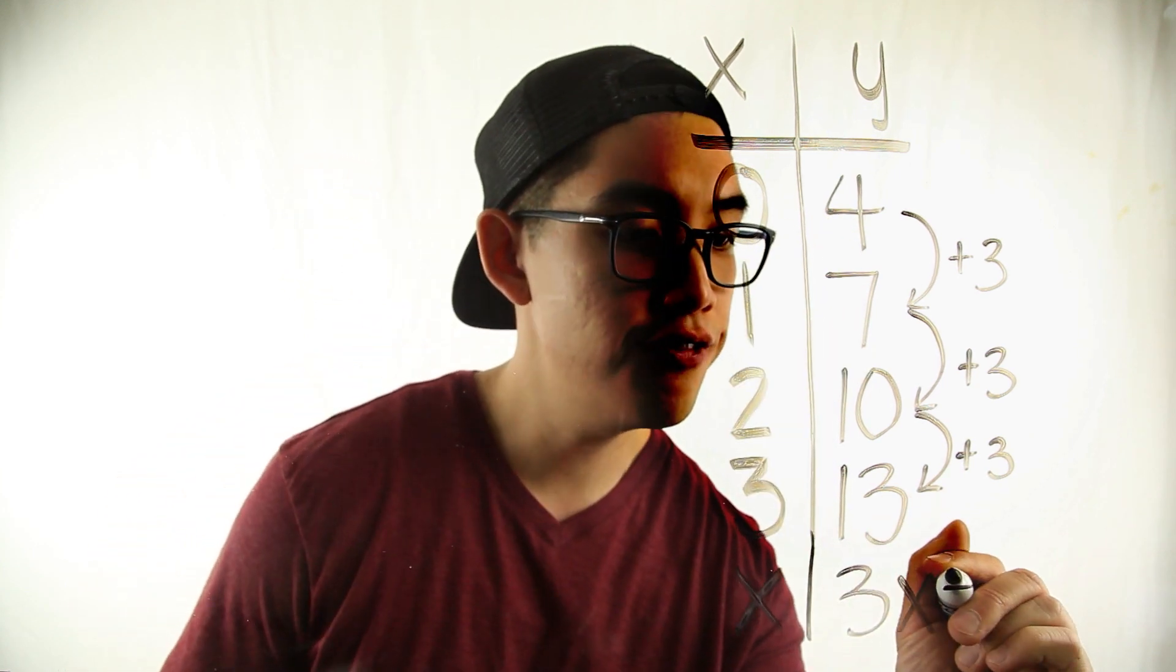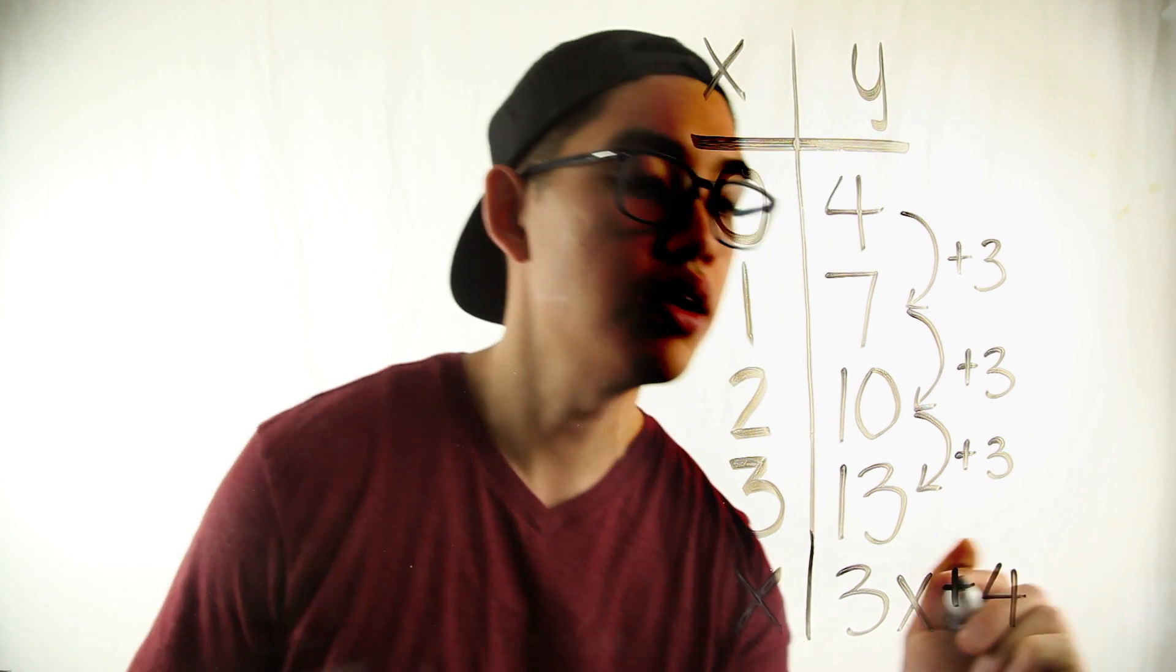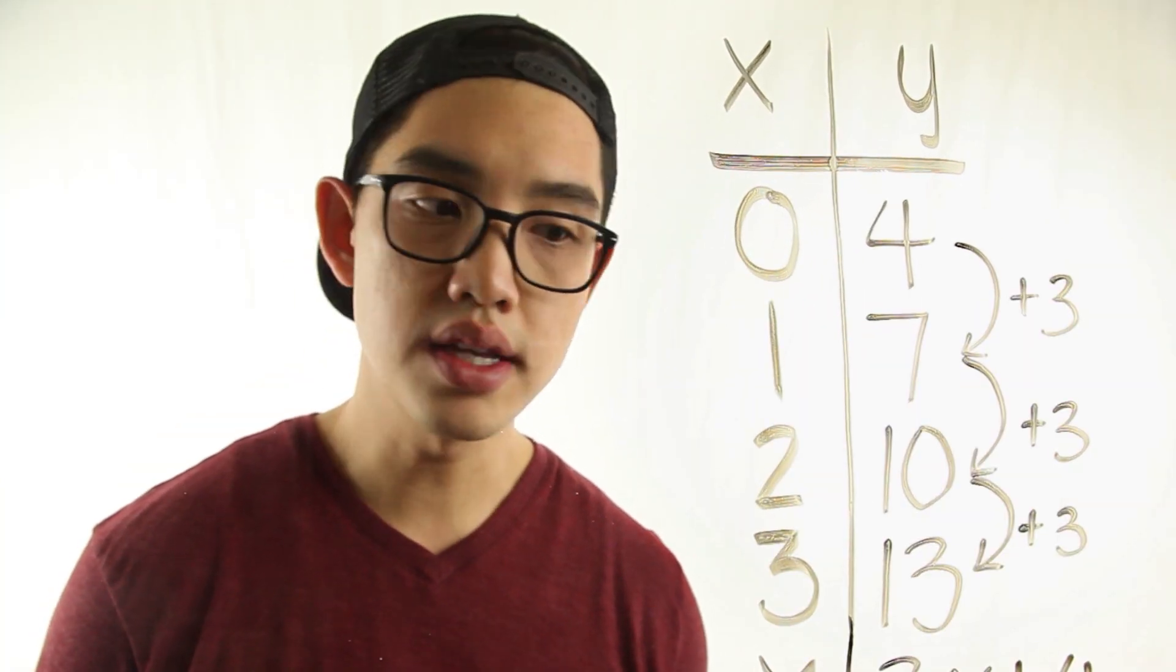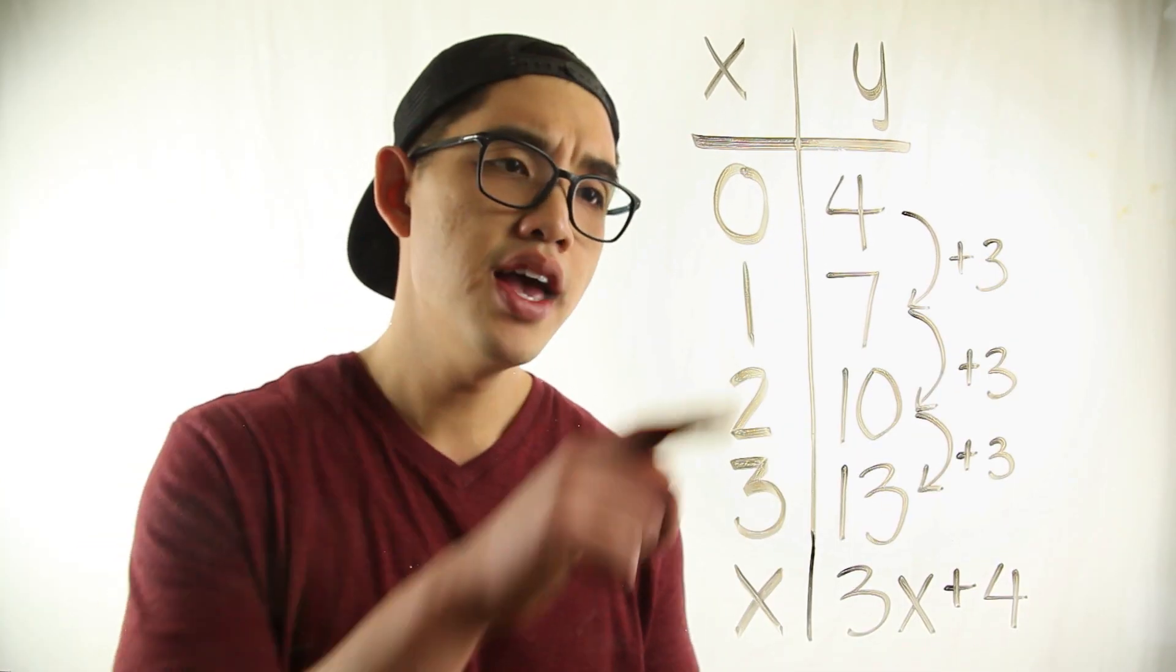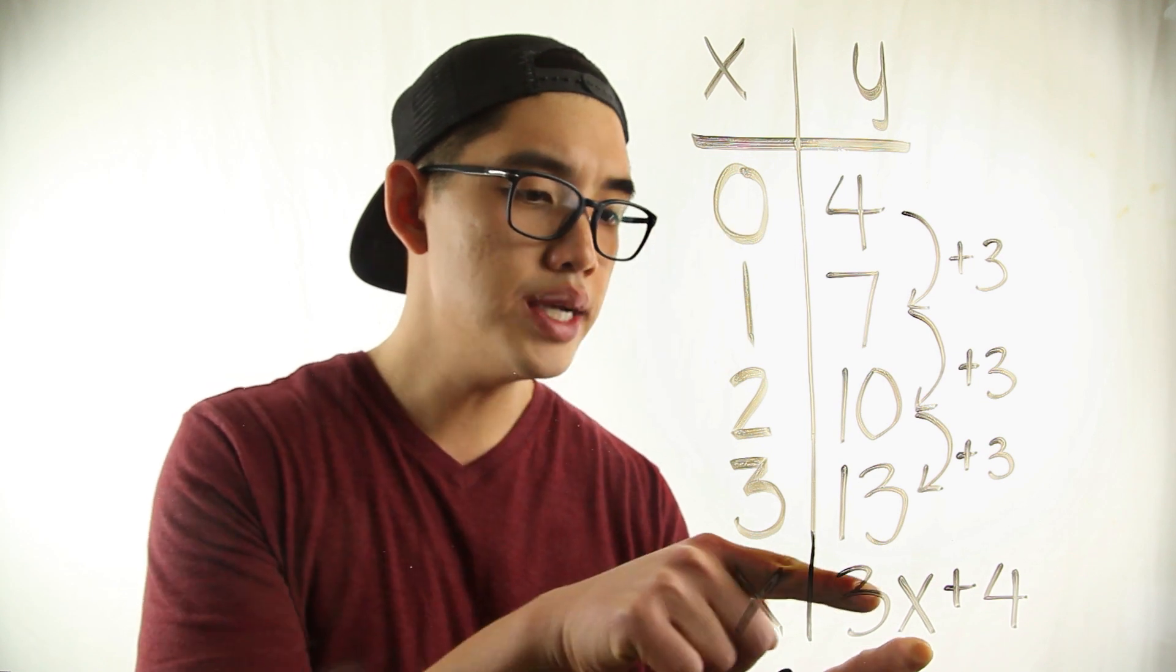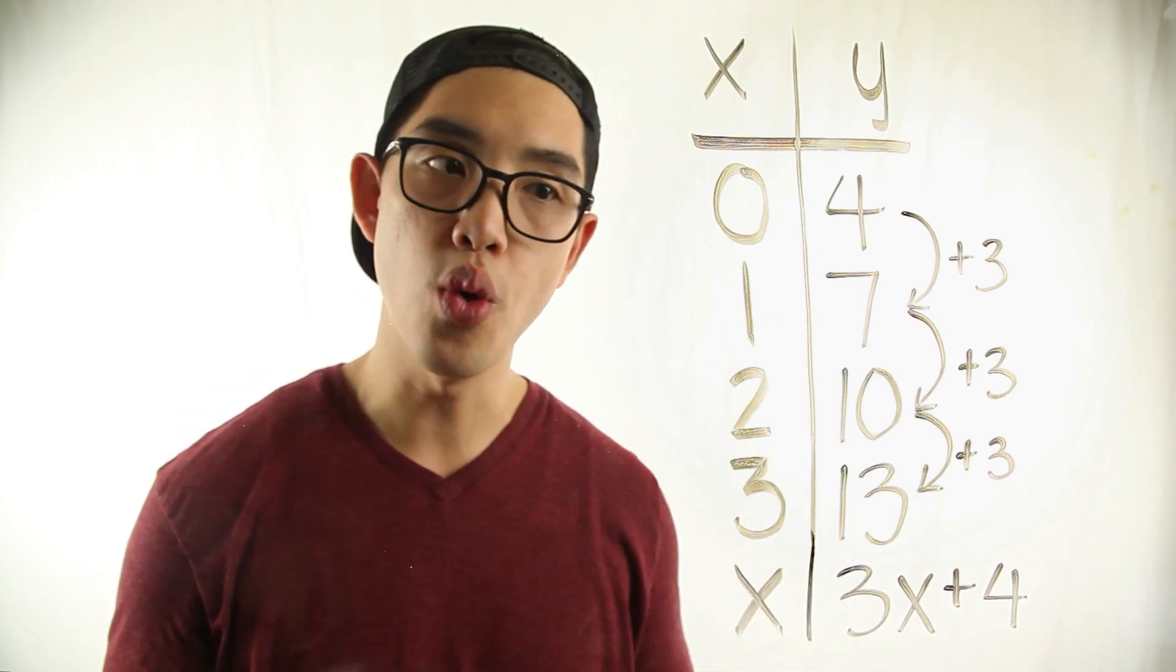So then I'm gonna add that four right here. Let's check if our answer works. Three x plus four. If I put in zero in here, three times zero that's zero, plus four. You get four.